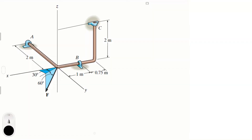The bent rod is supported at A, B, and C by smooth journal bearings. Determine the magnitude of F which will cause a positive x-component of reaction at bearing C to be Cx = 50 newtons. The bearings are in proper alignment and exert only force reactions on the rod.